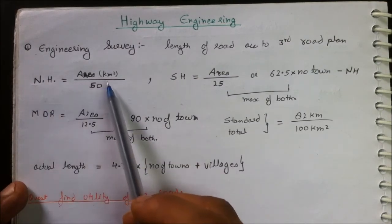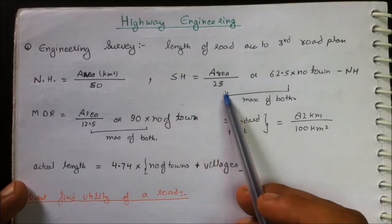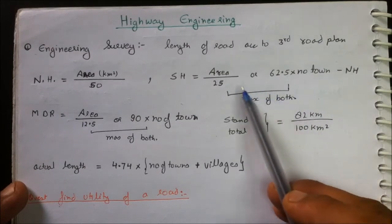The length of the National Highway is denoted as Area in square kilometers divided by 50. State Highway comes up to be Area divided by 25, or 62.5 times the number of towns minus the length of the National Highway, maximum of both.